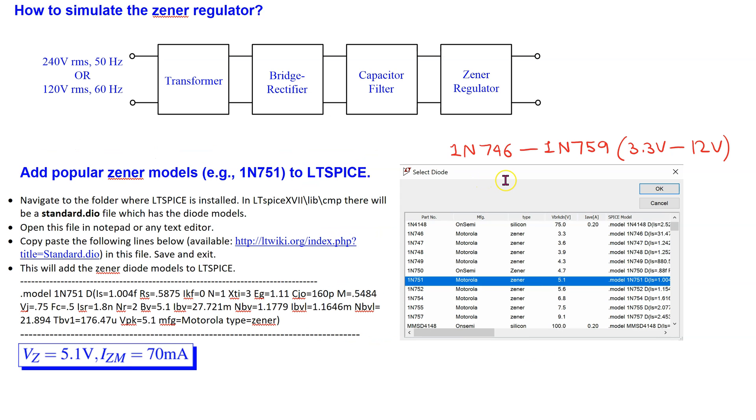The 1N746 to 1N759 is a popular Zener diode family covering Zener voltages ranging from 3.3 to 12 volt. The 1N750, which is a 4.7 volt Zener diode, is available by default within LTSpice. Other Zener diodes such as 1N751 can be easily added to LTSpice following the instructions shown here. Please pause the video if you wish to study these instructions in more detail.